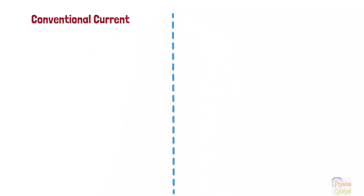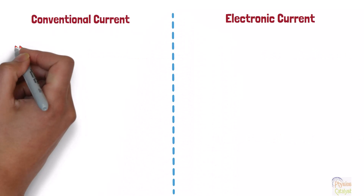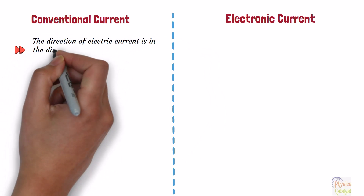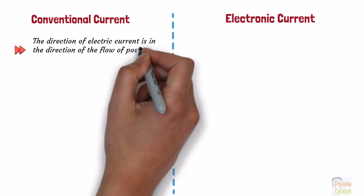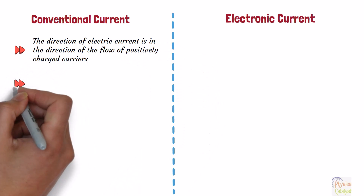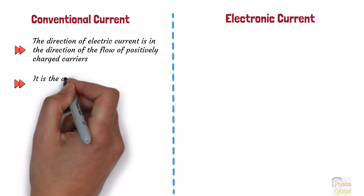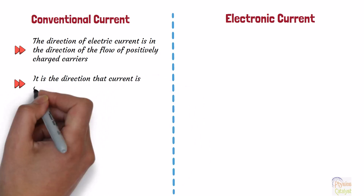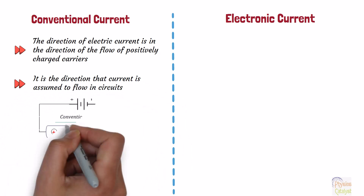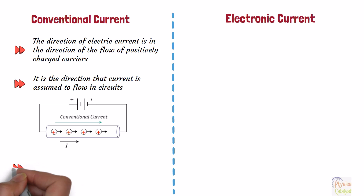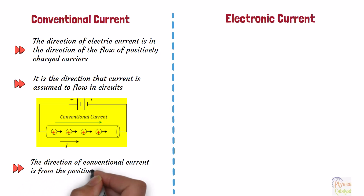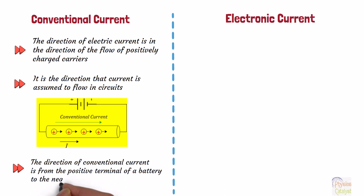Let's understand what is conventional current. The direction of electric current is in the direction of the flow of positively charged carriers, and this current is known as conventional current. It is the direction that current is assumed to flow in a circuit, even though electrons actually flow in the opposite direction. The direction of conventional current is from the positive terminal of a battery to the negative terminal, as shown in this figure.